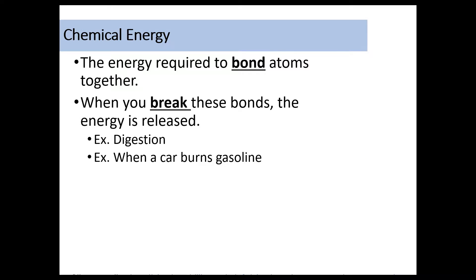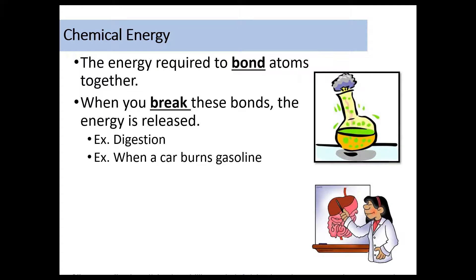Chemical energy is the energy required to bond atoms together. And when you break these bonds, energy is released. So there's a lot of different examples. If you've taken biology or a life science class, you may have talked about photosynthesis, which is an example of chemical energy, where sunlight is converted to nutrients for a plant. Digestion would also be an example of chemical energy. When a car burns gasoline, that is an example of chemical energy. So think chemical reaction. This is as far as we're going with this type of energy because we've got a whole unit, actually three units over chemical energy that we're going to get to in our chemistry portion of the course. So just hang tight there. Just know a definition and maybe an example or two.